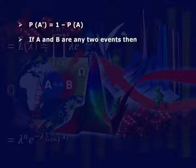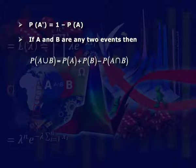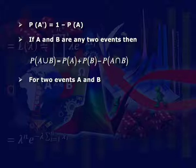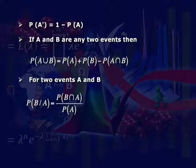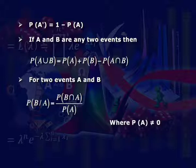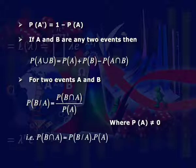In probability theory, some important theorems are used. First: P(A') = 1 − P(A). Second: if A and B are any two events, then P(A ∪ B) = P(A) + P(B) − P(A ∩ B). For two events A and B: P(B|A) = P(B ∩ A) / P(A), where P(A) ≠ 0. That is, P(B ∩ A) = P(B|A) · P(A).